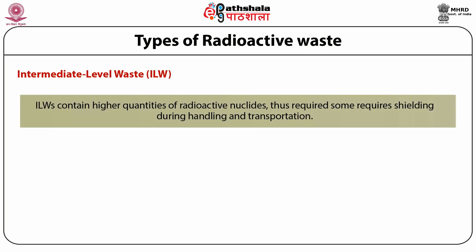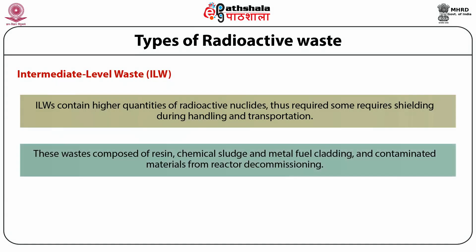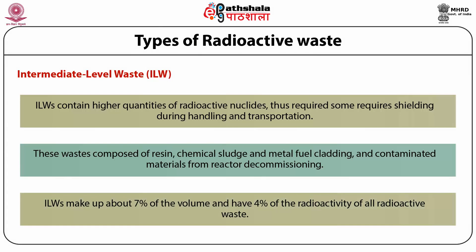Intermediate level waste (ILW) contains higher quantities of radioactive nuclides and thus requires some shielding during handling and transportation. It is composed of resin, chemical sludge, metal fuel cladding, and contaminated materials from reactor decommissioning. ILW makes up about 7% of the volume and has 4% of the radioactivity of all radioactive waste.